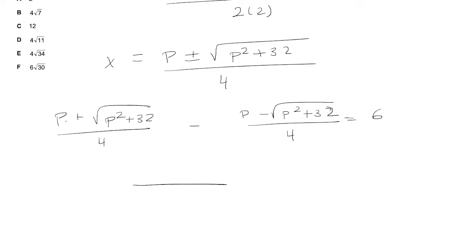I have p - p, those are going to cancel. And then √(p² + 32) minus negative √(p² + 32), that's going to give me 2√(p² + 32). And then it's going to be over the denominator of 4, and that's going to equal 6.